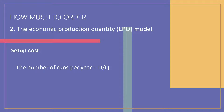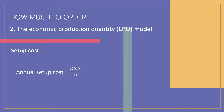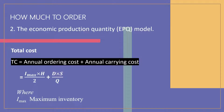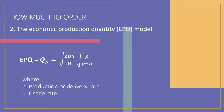The number of runs or batches per year is the annual demand D divided by the run size Q, and the annual setup cost equals the number of runs per year times the setup cost S per run. So the annual setup cost equals D multiplied by S divided by Q. Consequently, the total cost TC equals annual carrying cost plus annual ordering cost, which equals I_maximum multiplied by H divided by 2, plus D multiplied by S divided by Q, where I_maximum is the maximum inventory.